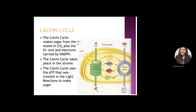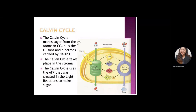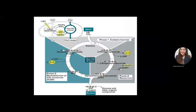The Calvin cycle uses the ATP created in the light reaction to make sugar, C₆H₁₂O₆. Since it is a cycle, carbon dioxide enters through the stomata and goes through three phases: phase one is carbon fixation, phase two is reduction, and phase three is regeneration of the carbon dioxide acceptor, also called RuBP. This cycle keeps continuing to create one molecule of glucose, also called G3P per run.